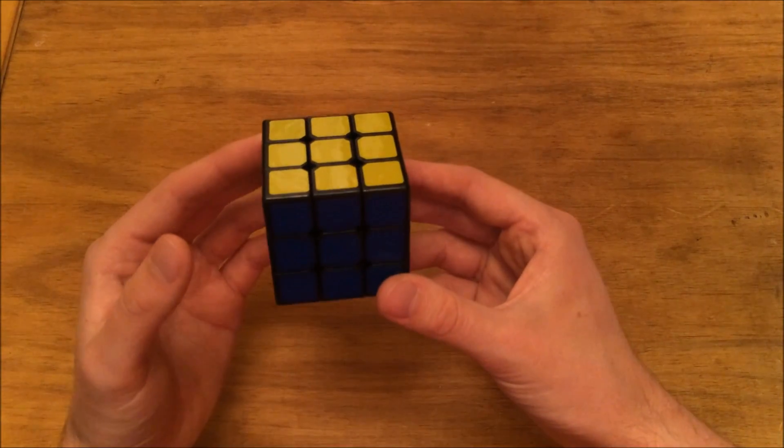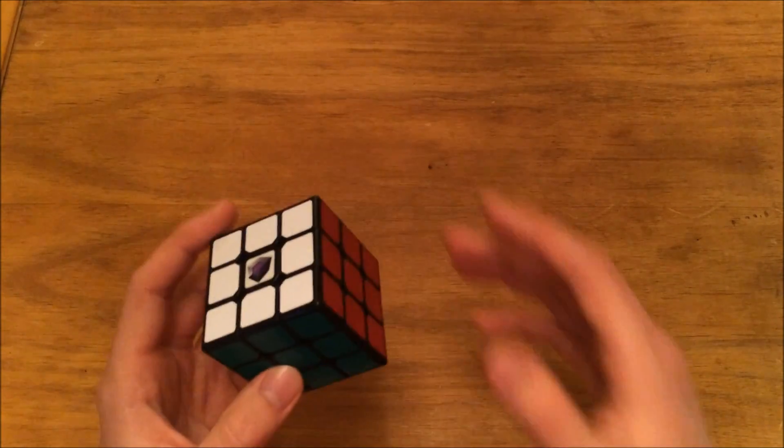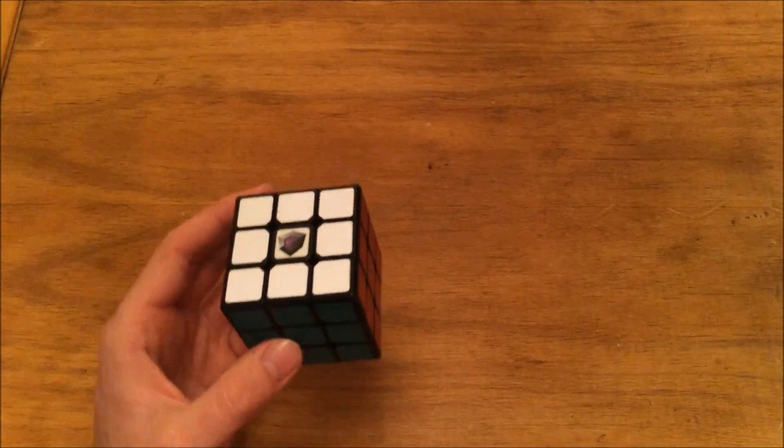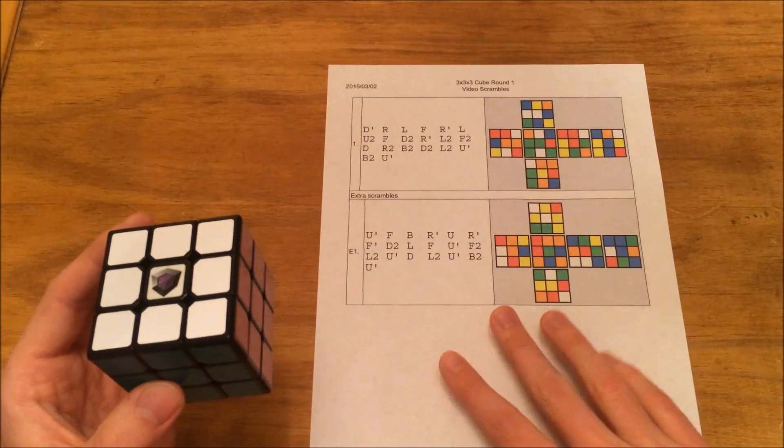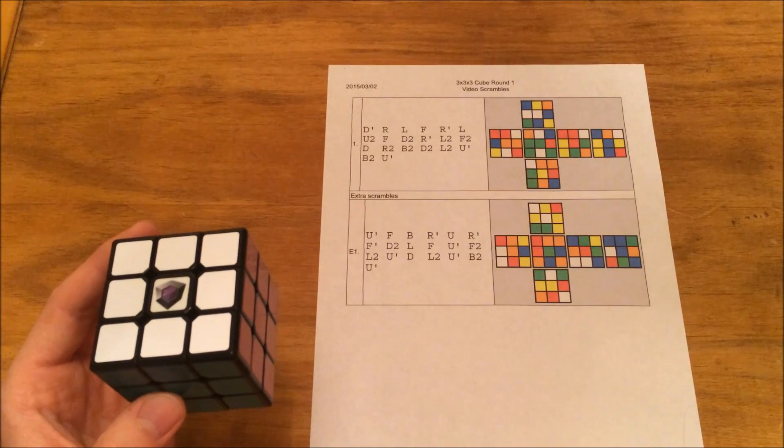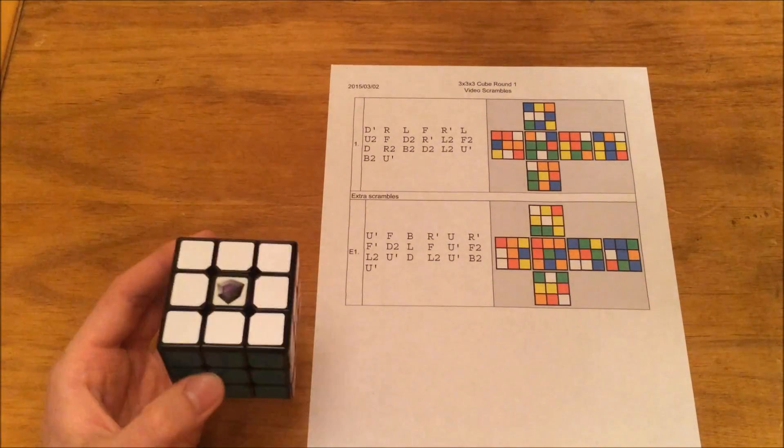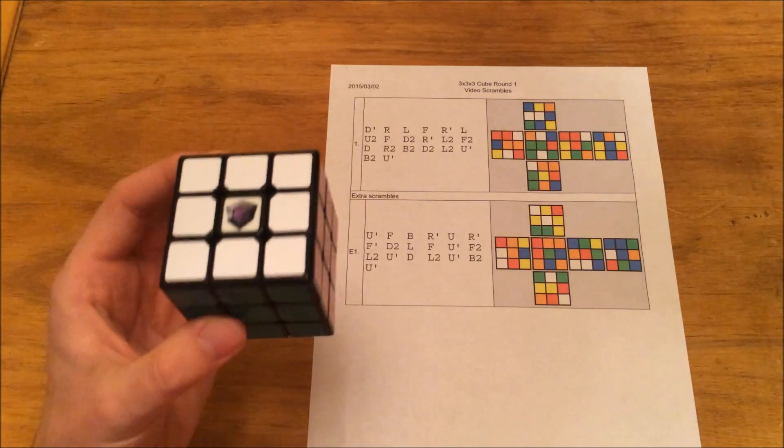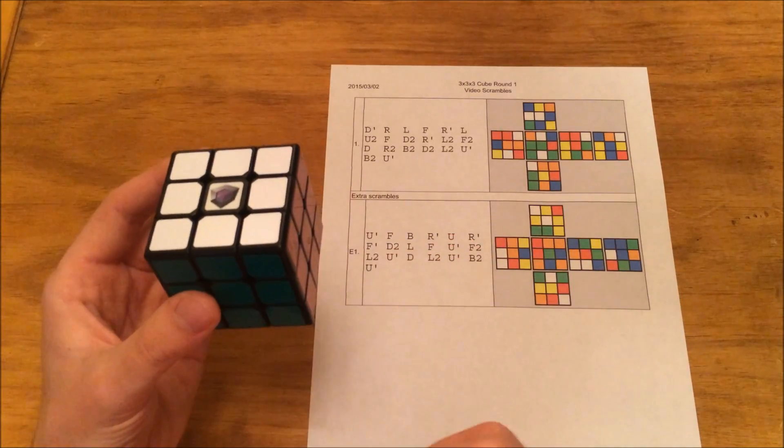So now that we have our scramble orientation, let's do a walkthrough scramble. I have a scramble here for three by three from TNoodle, and hopefully you guys can see it. So we will start our scramble. And so again, we're going to start with white on top and green on front.